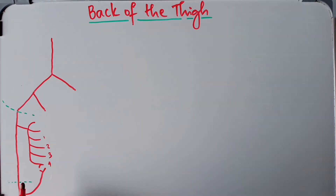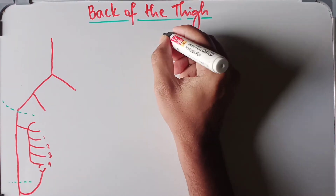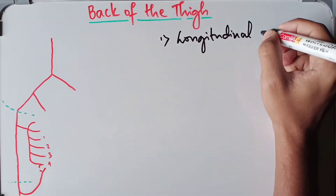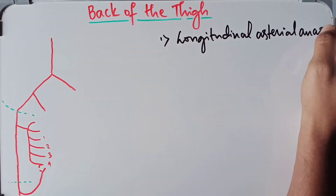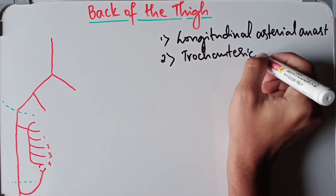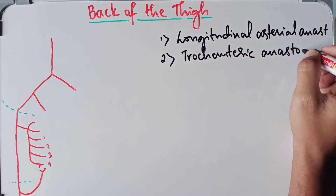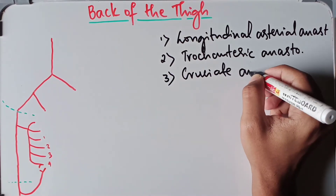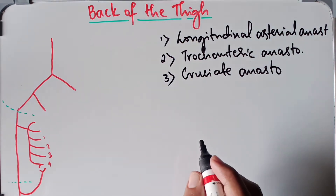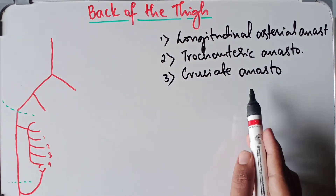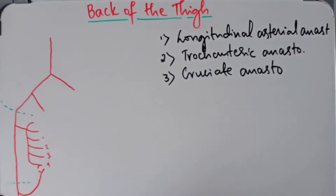This covers the basics you need to know about the arterial anastomosis on the back of the thigh. There are three types of anastomosis: number one is the longitudinal arterial anastomosis, number two is the trochanteric anastomosis, and number three is the cruciate anastomosis. We are now going to look into the detail of each one of them.